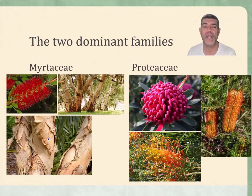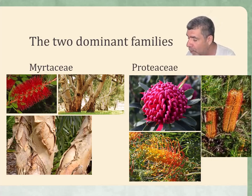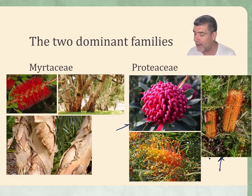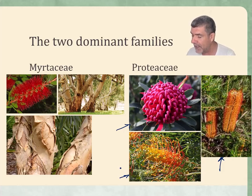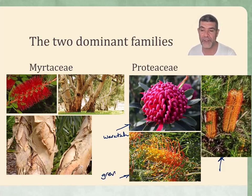So what are we really talking about? We're talking about the two dominant families we see in Australia. The Proteaceae — obviously not only found in Australia — includes quite interesting species such as the waratah, which is the state emblem for New South Wales, banksias, which are very common, grevillea, and also hakea, another representative of the Proteaceae group that are quite common on the Australian continent.